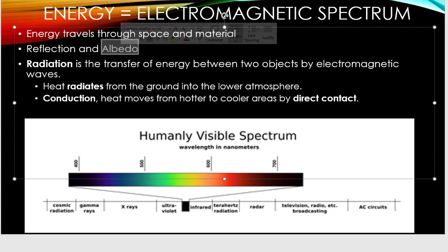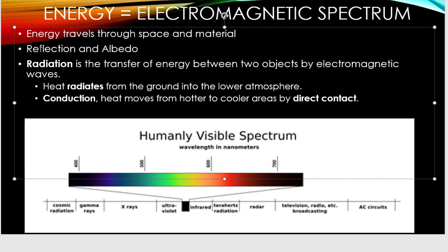Reflection is energy waves bouncing off an object, and albedo is the reflectivity of an object. High albedo means it reflects more energy — snow has a high albedo and reflects more solar radiation. Oceans are darker and tend to absorb more, so an ocean would have low albedo. Snow and ice have high albedo; oceans have low albedo, meaning low albedo gets warmer because it absorbs more heat.